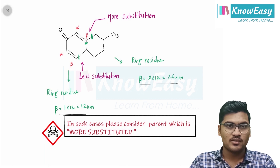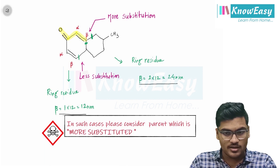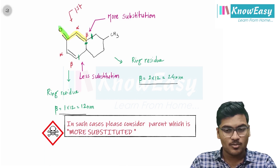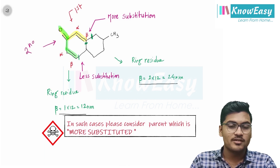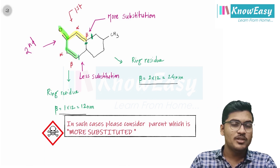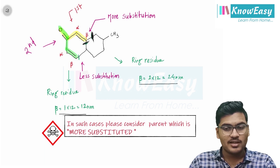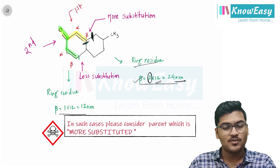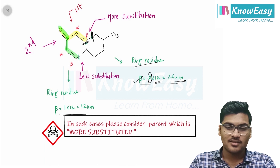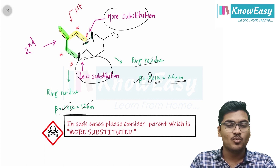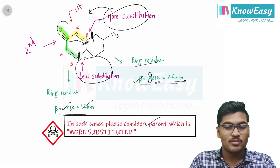Sometimes tricky questions are given. Here there are two possible parents — each has a carbonyl carbon with an alpha-beta double bond. Out of the two, you have to select only one as the parent. In such cases, identify the ring residues for each. For the first candidate, two residues are directly attached at beta position: 2×12 = 24 nanometers total contribution. For the second candidate, only one attachment exists at beta: 1×12 = 12 nanometers. Since the first is more substituted, you will consider the more substituted system as your parent.